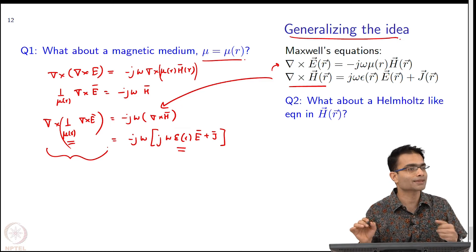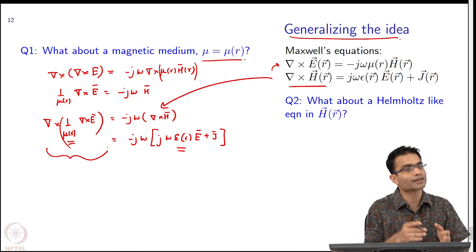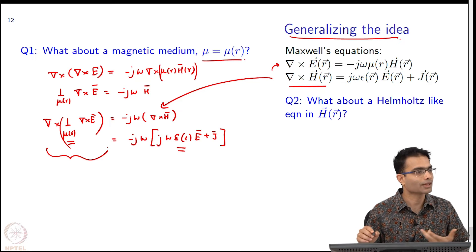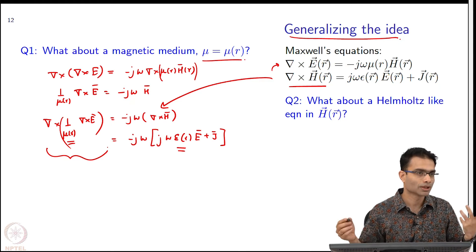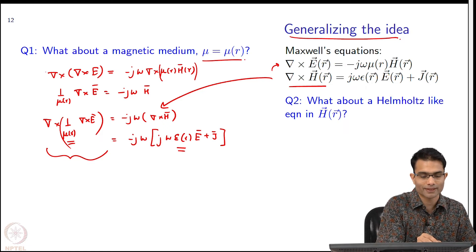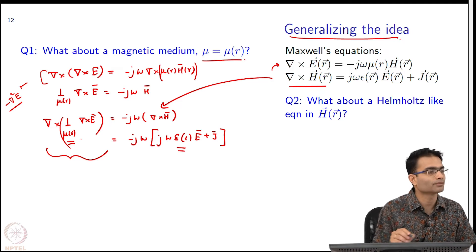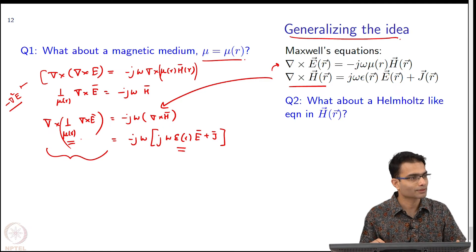This is not a very pretty expression right, it is curl of some funny looking object and then we have to use the rules of vector calculus to open this up. So, the price you pay is that the analytical formulation before I discretize and solve is a little bit more complicated, but it is nothing that we cannot deal with, it is just more terms. Earlier this thing has simplified very nicely into only a minus del squared E, but now I will have many more terms, ok that is fine.